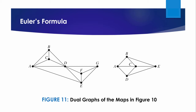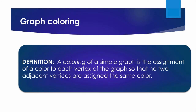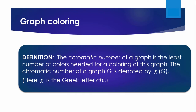Figure 11 displays the dual graphs corresponding to the maps shown in Figure 10. The problem of coloring the regions of the map is equivalent to coloring the vertices of the dual graph so that no two adjacent vertices have the same color. A coloring of a simple graph is the assignment of a color to each vertex so that no two adjacent vertices are assigned the same color. A graph can be colored by assigning a different color to each of its vertices, but for most graphs a coloring can be found that uses fewer colors than the number of vertices.